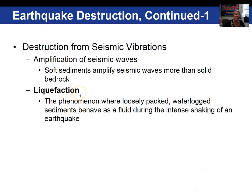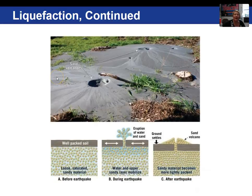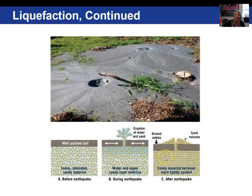Liquefaction occurs when loosely packed, waterlogged sediments behave as a fluid when the ground shakes, and everything sitting on top of that flowing material goes with it. These tilted buildings were on unconsolidated sediment that behaved like quicksand when the earthquake occurred. Evidence of liquefaction includes features called sand volcanoes — loose saturated sandy material becomes more tightly packed after the earthquake, reducing pore space, and the water and upper sandy layers eject to the surface.